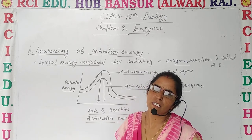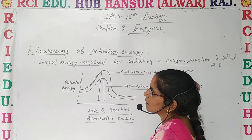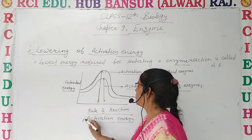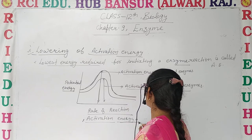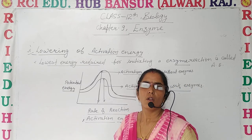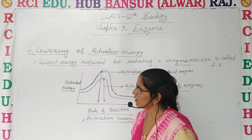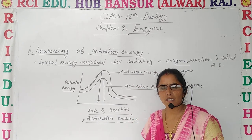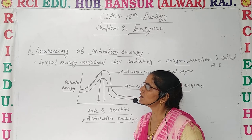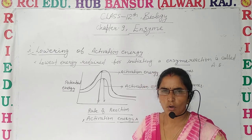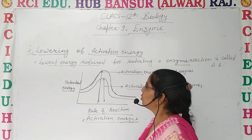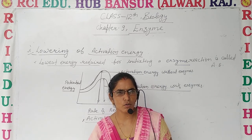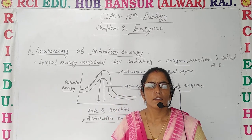With an enzyme, the substrate can easily be converted into product. So this was the second point — how the activation energy is lowered. This is all about the mechanism of enzymes: ESC formation plus activation energy lowering. I hope you understood. Like, comment, and share the video. Subscribe also. Goodbye.